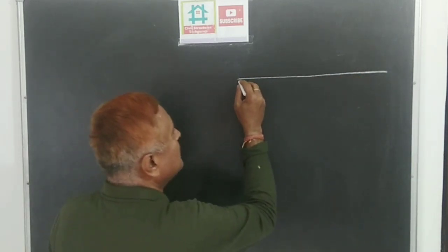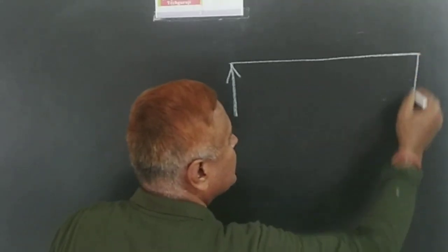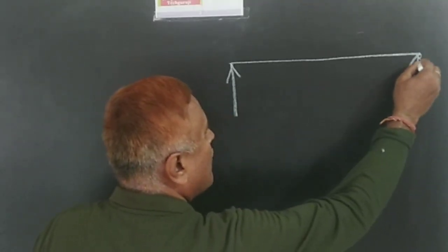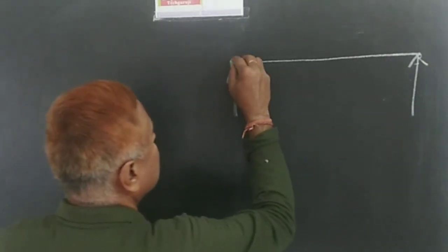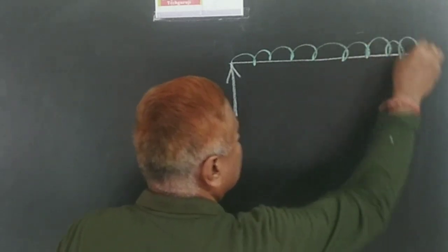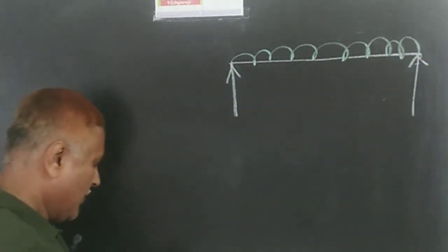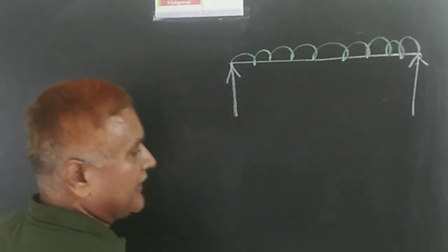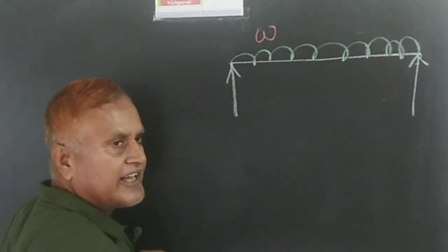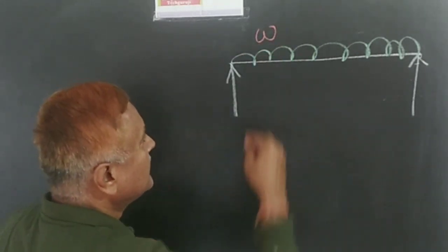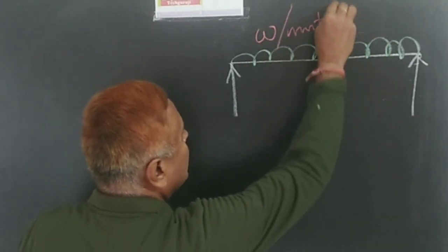This is a simply supported beam with two supports, subjected to a UDL — a uniformly distributed load. The loading pattern shows W in kg or Newton per unit length, for example 5 Newton per meter or 5 Newton per centimeter. The span of the beam is L.